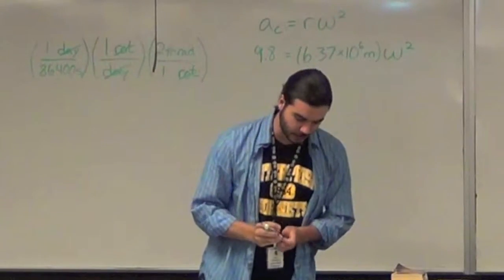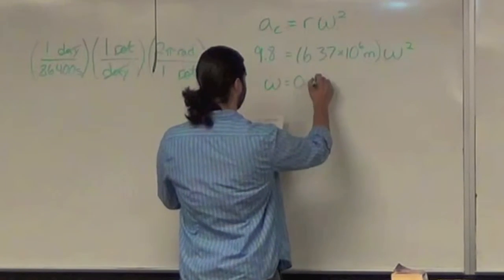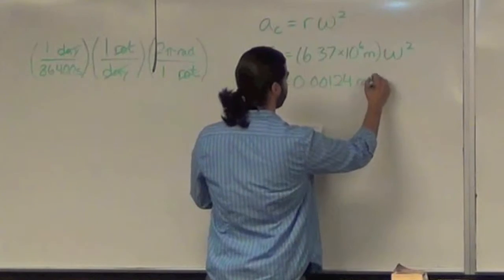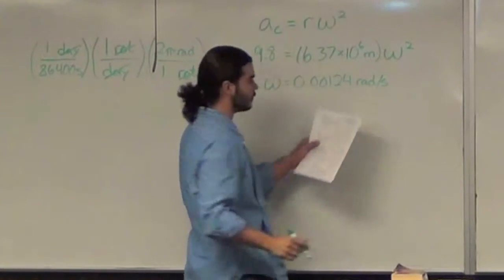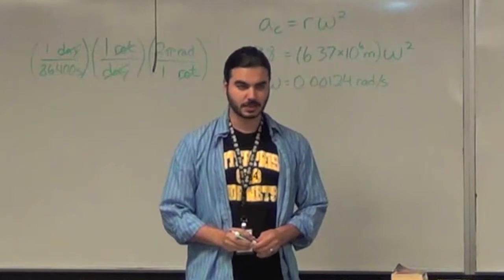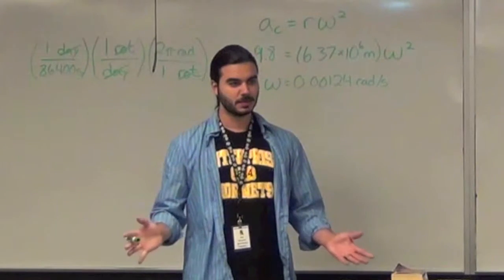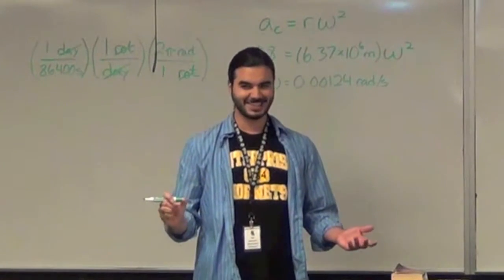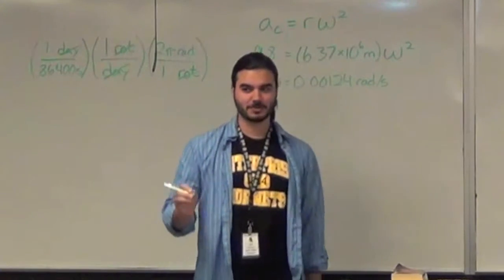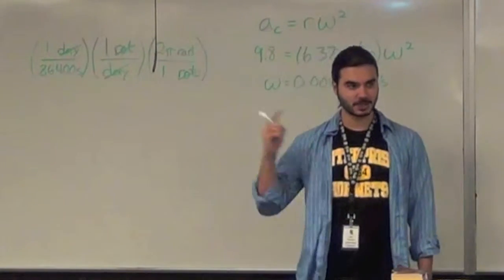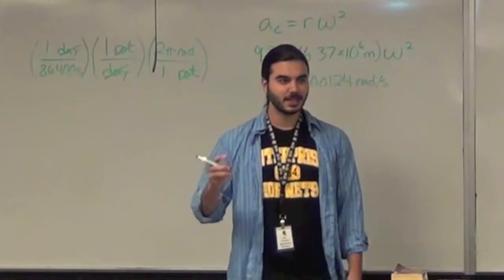You end up getting a new angular velocity of 0.00124, but that's in radians per second. If you convert this from radians per second to rotations per day, it's, wait for it... It's 17. You guys remember how I told you to remember that the International Space Station goes around 17 times a day?